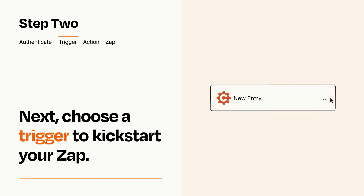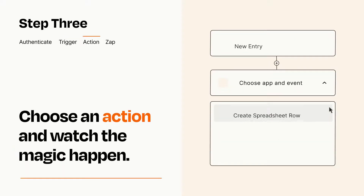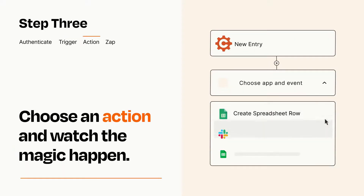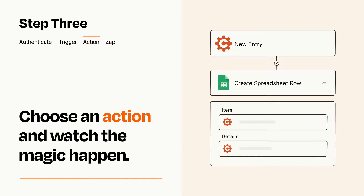This last part is where the magic happens. Choose the action you want to happen in your target app. You'll see a bunch of fields where you can specify the details of your Zap. You can type free form text or pull data in from your trigger step as needed.